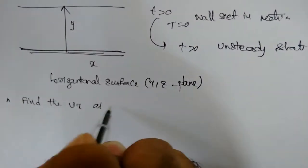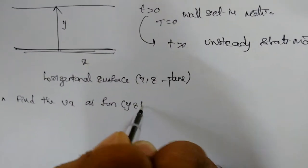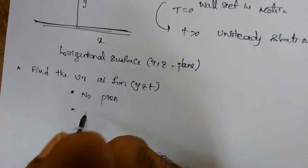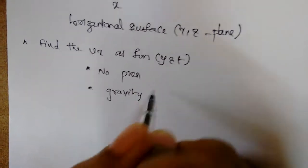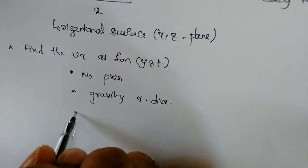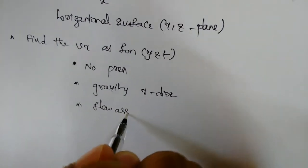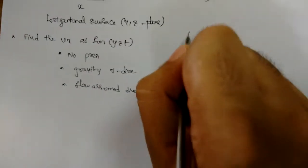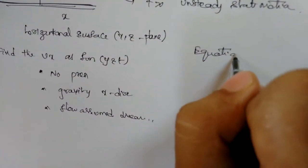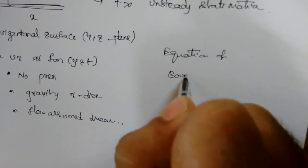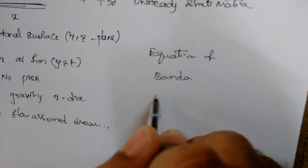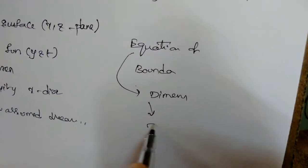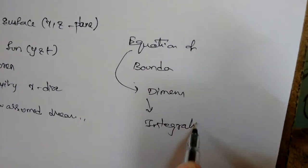The key assumptions are: no pressure gradient, gravitational force is negligible since flow is in the x-direction only, and flow is assumed to be linear. The solution blueprint is: apply the equation of motion, apply boundary conditions, convert to dimensionless form, then perform dimensional integration to get the result.